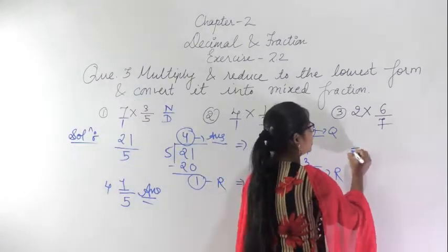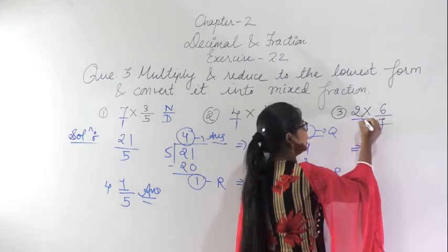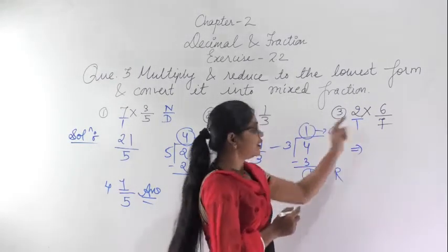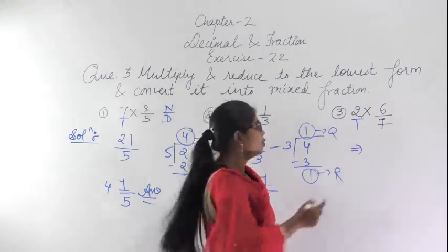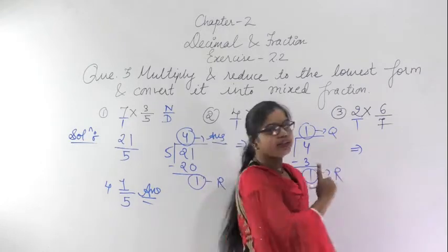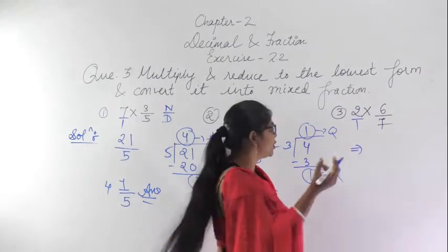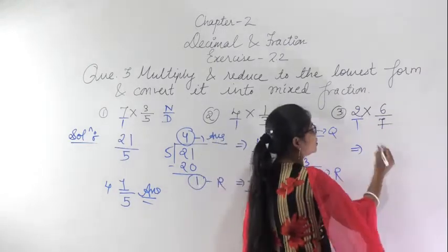For the third sub-question, again write it down in the form of a fraction, dividing by 1. Multiply numerator by numerator and denominator by denominator.